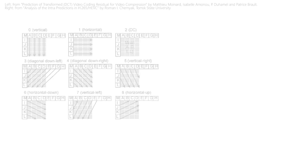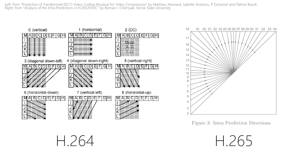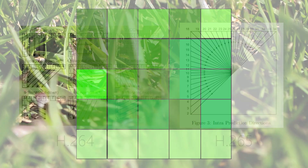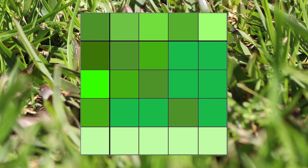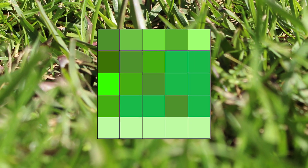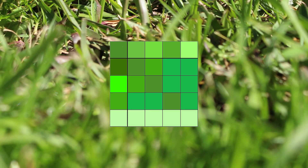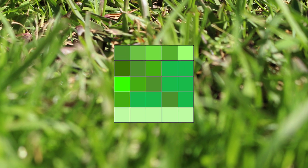Now here again, there is a difference with H.265, and it's a good one. Back in the old days, I only had 9 prediction modes. But now I have access to 35 different modes. The advantages to this are many, including far greater accuracy when larger block sizes are used — say for example in 4K video — and generally much better quality compression.